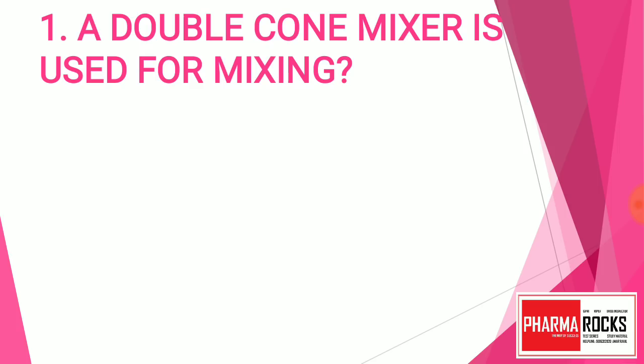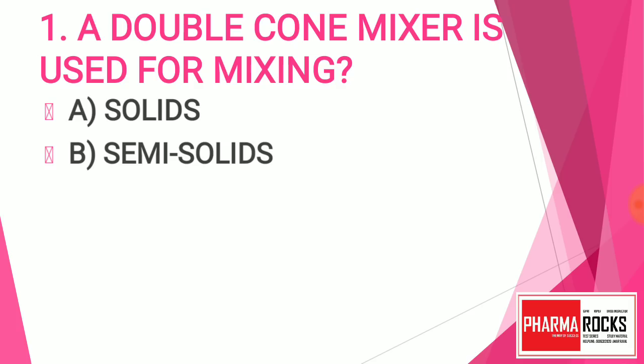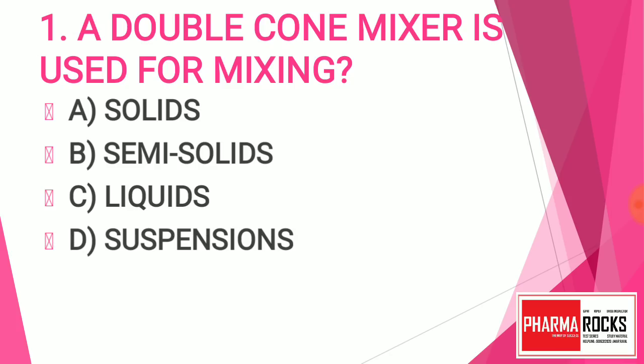Question number one: A double cone mixer is used for the mixing of — Option A: Solids, Option B: Semi-solid, Option C: Liquids, Option D: Suspension.